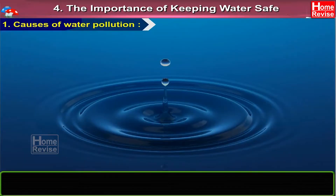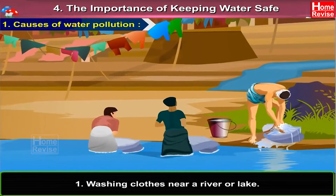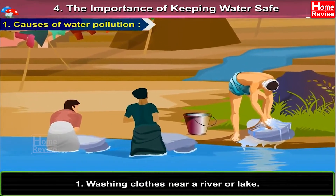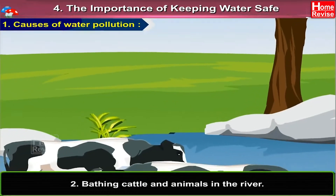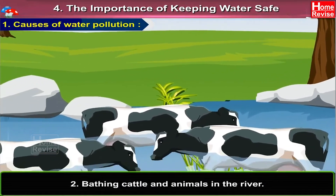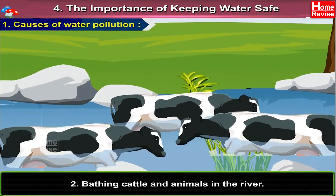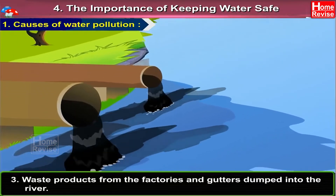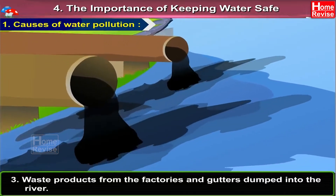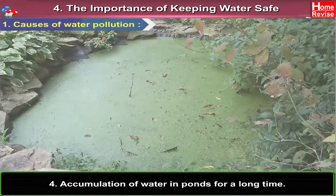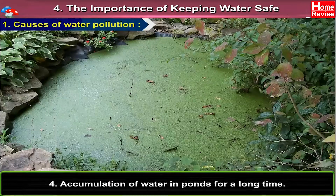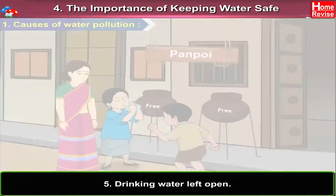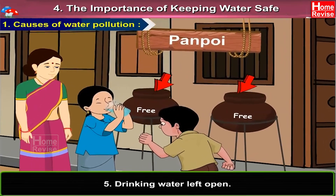Causes of Water Pollution: 1. Washing clothes near a river or lake. 2. Bathing cattle and animals in the river. 3. Waste products from the factories and gutters dumped into the river. 4. Accumulation of water in ponds for a long time. 5. Drinking water left open.